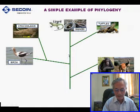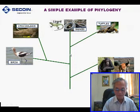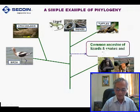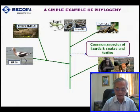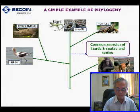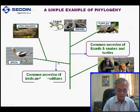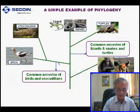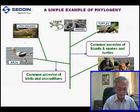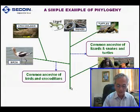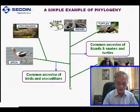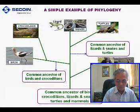You can see that this clade is the common ancestor of lizard, snake, and turtle. This clade is the common ancestor of bird and crocodile, and this base is the common ancestor of all.